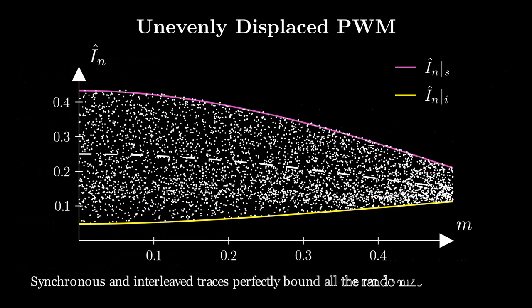Is interleaved PWM always the best technique? In this regard, 4,000 numerical validations considering unevenly displaced PWM carriers have been performed. As visible, synchronous and interleaved traces always bound all the randomized results. Clearly, interleaved PWM is always the best technique in this kind of inverter.